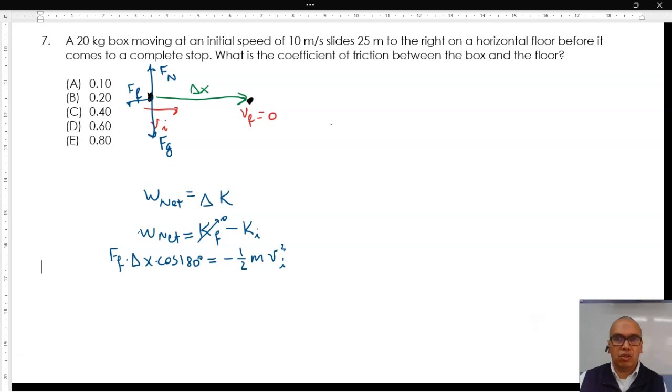The friction force is equal to the coefficient of friction times the normal force, and the cosine of 180 degrees is negative one. Now it is clear we can cancel the negative signs, and since there is equilibrium in the vertical direction, the normal force is equal in magnitude to the gravitational force.